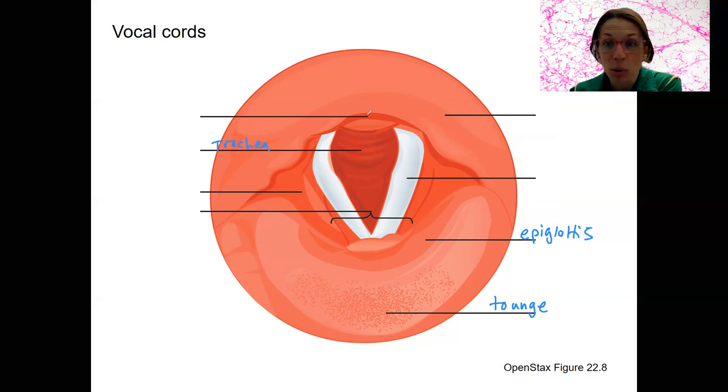And back here, this is where we want food to go. This is the esophagus. We'll look a little bit more closely at what happens during swallowing when we get to the digestive system.